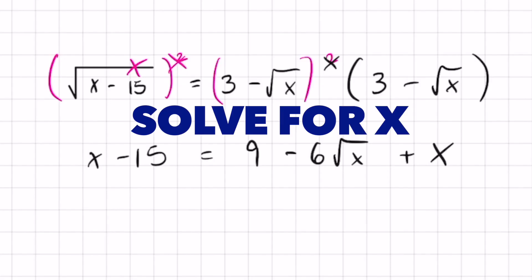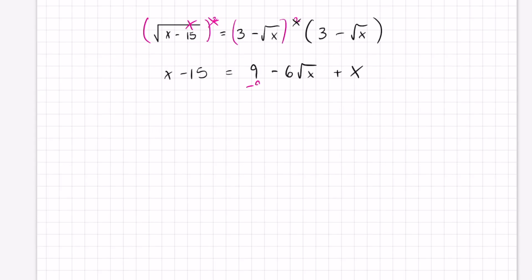Now let's get x by itself. I'm going to subtract the 9 and subtract an x at the same time to go faster. These x's are going to cancel out. I'm left with negative 24 on the left side. These cancel out, negative 6 root x, and these cancel out.